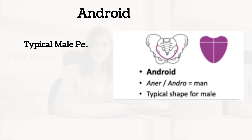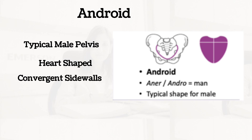The android pelvis is a typical male pelvis and is found in about one third of white women and one out of six non-white women. The pelvic brim is heart-shaped and the pelvis funnels downward from above, meaning it has convergent side walls — they are not straight; they funnel down.